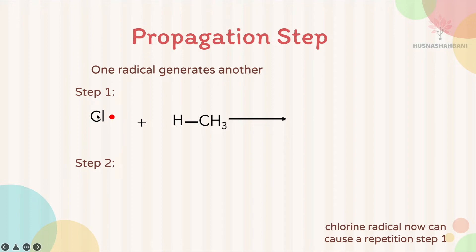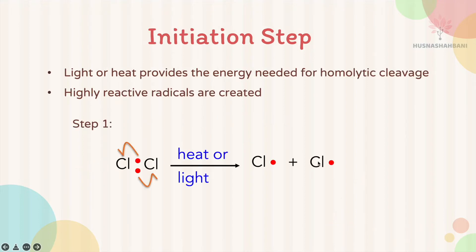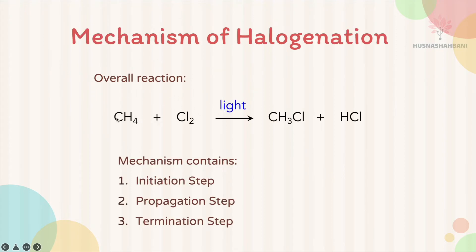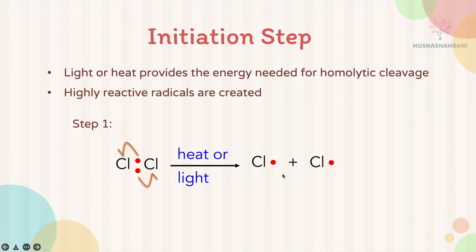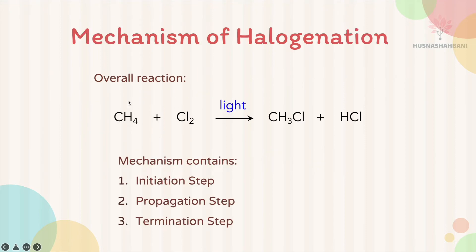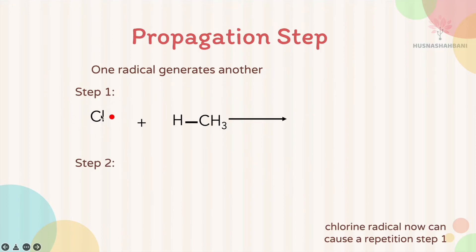Next is the propagation step — one radical generates another. The products from the previous step are two chlorine free radicals. Referring to the overall reaction, the reactants are Cl₂ and CH₄. Free radicals are very reactive, so the Cl free radical will not attack itself; it will attack the methane. In the propagation step, the Cl free radical attacks the hydrogen in methane.